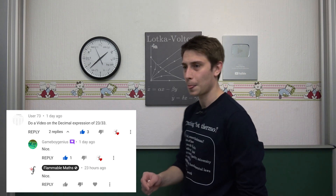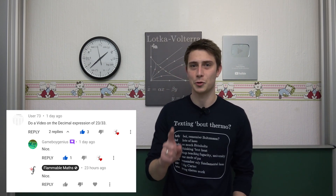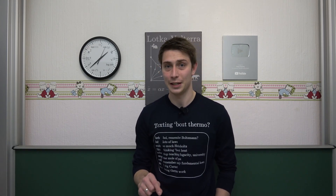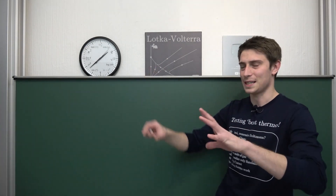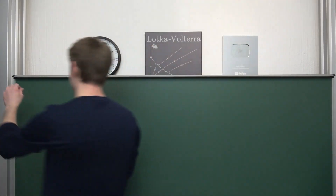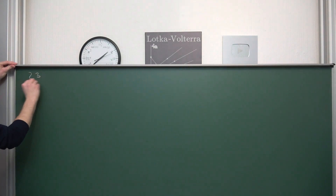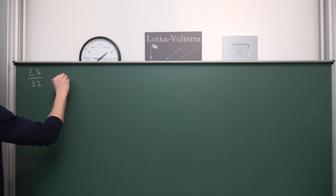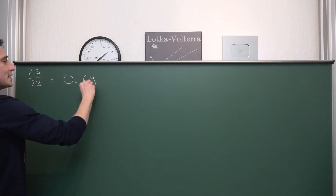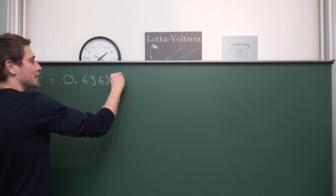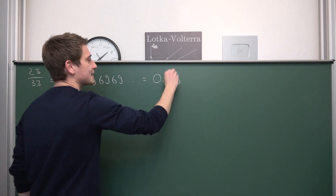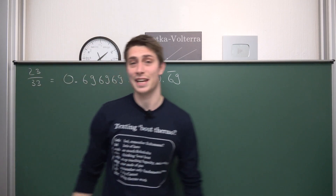Now you might ask yourself: how did I know that I have to write 'nice' under this one? If you've ever done basic number theory, you might know what's going on here. Namely, the answer to the fraction he gave me — 23 over 33 — turns out to be nothing but 0.696969... up until infinity. It's a repeating decimal in 69, and this is very nice.